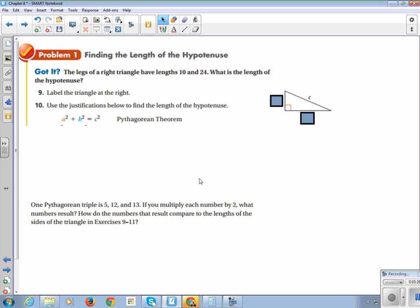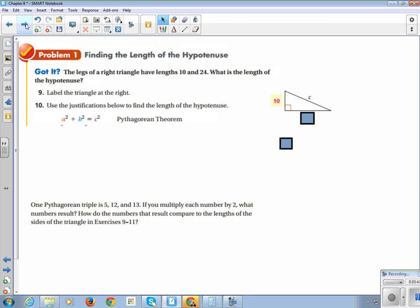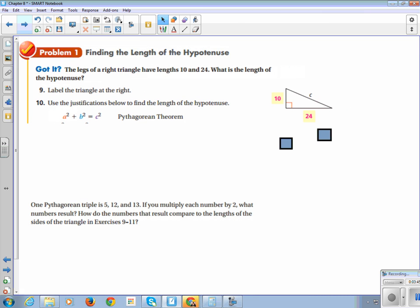Alright, so let's see if we can apply this. The legs of a right triangle have lengths 10 and 24. What is the length of the hypotenuse? My suggestion is you always, when you're doing problems, always draw the picture.